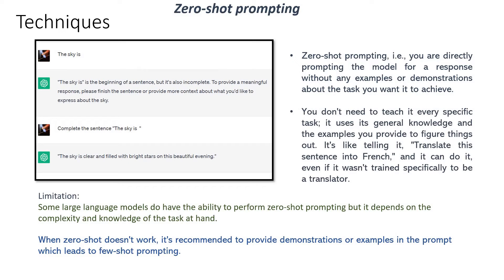It is like pushing in 'Translate this sentence to French' — and it can do it even without being specifically trained for that task; it will still try to get better results. However, some large language models do have the ability to perform zero-shot prompting, but it depends on the complexity and the knowledge required. When zero-shot does not work, it is recommended to provide demonstrations and more examples in the prompt — which takes you to the next level called few-shot prompting.